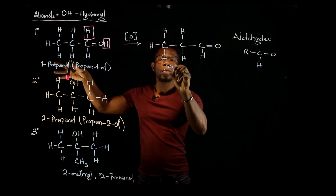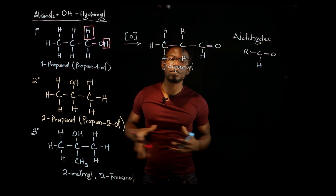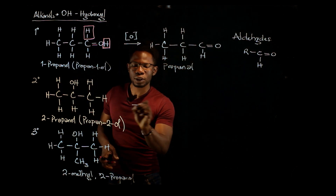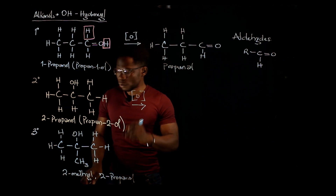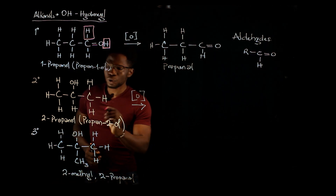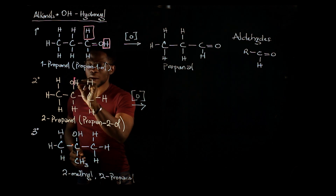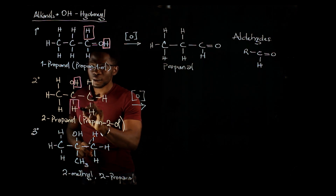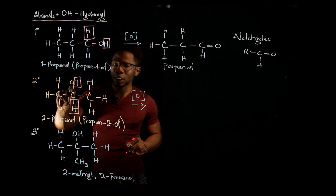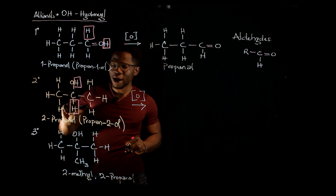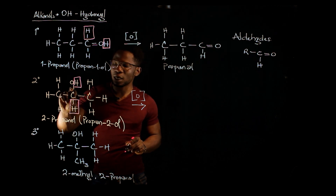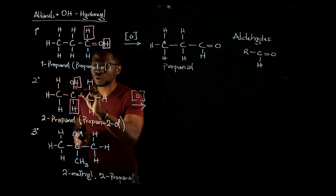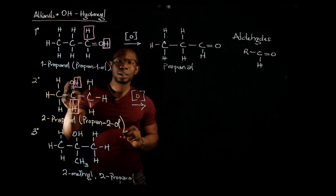This compound is called propanal, or less commonly propionaldehyde. Now, if you oxidize a secondary alcohol, the same thing happens — you lose the hydrogen atom attached to the hydroxyl group and you lose the free hydrogen atom attached to the carbon attached to the hydroxyl group.